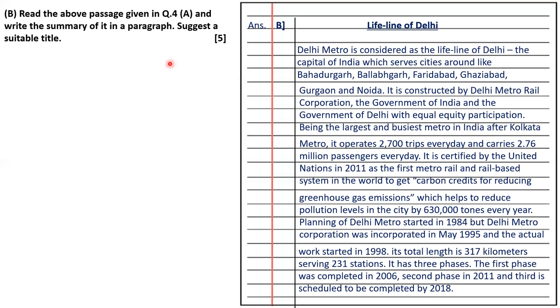Then question 4B is read the passage and write the summary of the passage given in question 4A. So now we'll read the summary. The title should be Lifeline of Delhi.